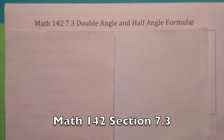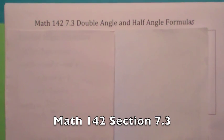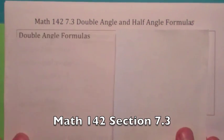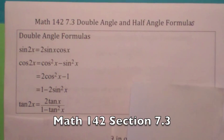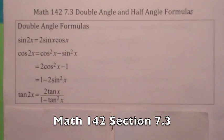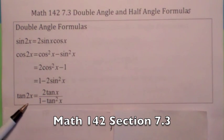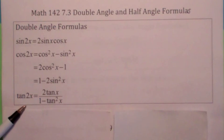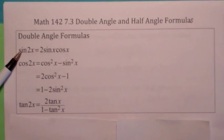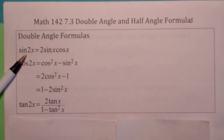We're going to look at the double and half angle formulas for sine and cosine, mainly. There's one for tangent too, but we're not going to focus that much on it. It might come up on the homework, or your teacher might emphasize it more than I do. But for sine and cosine, you definitely need to know these. We derive these from the addition angle formulas.